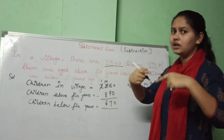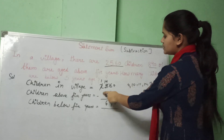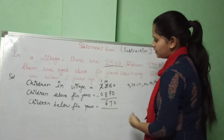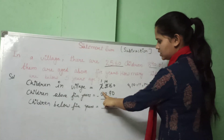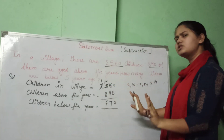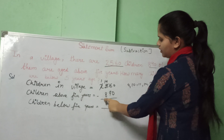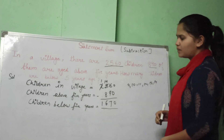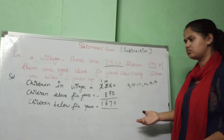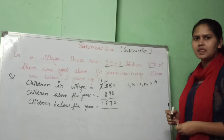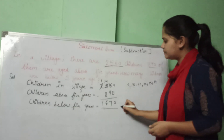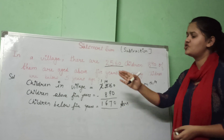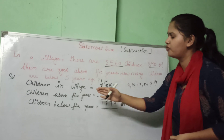For the thousands place, there is nothing to subtract, so we treat it as 0, as explained in the previous video. The 1 comes down as it is. So the answer is 1,670 children below 5 years.